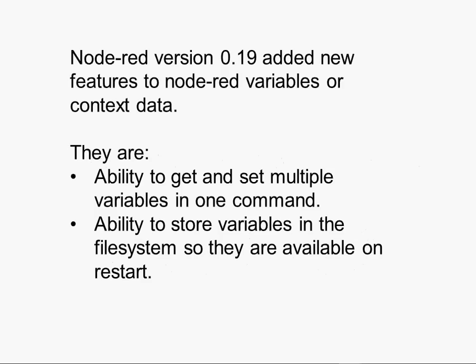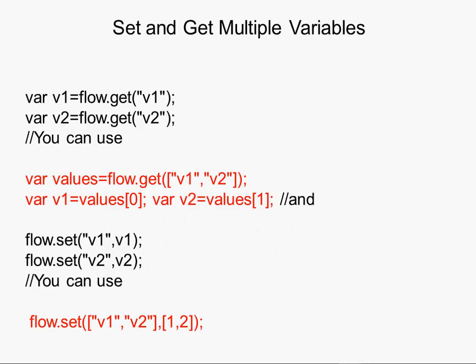The reason it's part 2 and the reason we need to visit again is because in version 0.19 they added two new features. Those features are the ability to store multiple variables in one single command, and what I consider even more important and more useful is the ability to store variables in the file system, so that if you restart the flow you don't lose those variables. So let's have a look at those and we'll start off with the multiple variables.